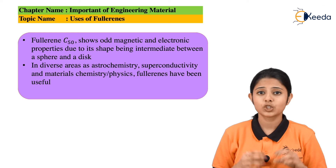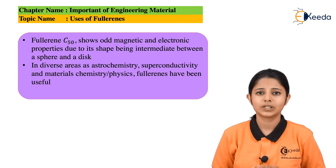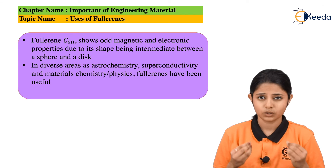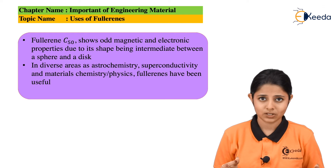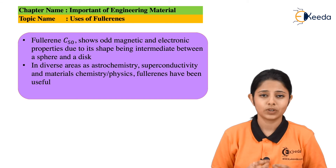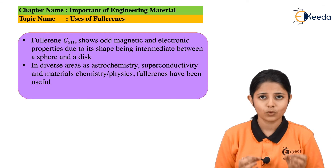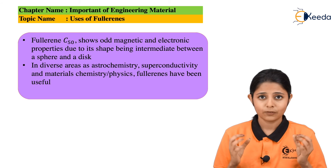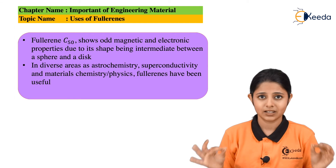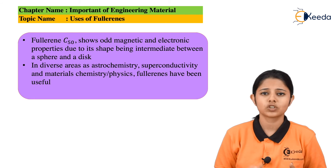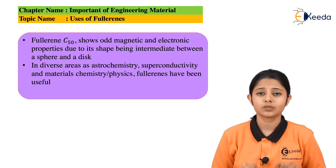Fullerene is also useful in superconductivity. Superconductivity is a phenomenon possessed by superconductors — conductors which can pass electricity without any kind of resistance. In normal conductors, there is always some resistance present even without external resistance applied. But superconductors have zero resistance, and superconductivity is attained at extremely low temperatures. During this process, Fullerene is very useful.